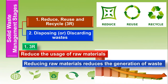Solid waste management involves the following stages. Before disposing or discarding waste, we apply the 3R principle: Reduce, Reuse, and Recycle. If the 3R principle is not suitable, we move to the discarding or disposing waste stage. The first R is Reduce — instead of purchasing large quantities of raw materials, we must precisely purchase what is needed and reduce the usage of raw materials, thereby reducing the generation of waste at the source itself.